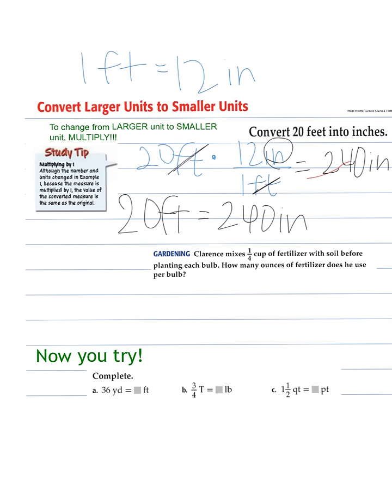Our next example here is this gardening example. Clarence mixes one-fourth cup of fertilizer with soil before planting each bulb. How many ounces of fertilizer does he use per bulb?